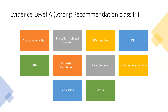Orthostatic hypertension is a risk factor, head injury is a risk factor, hyperhomocysteinemia is a risk factor, and depression and stress are also risk factors. Remember, these are risk factors, but the other way around they can be preventive. All of these risk factors and preventive aspects are evidence level A and strongly recommended — class 1.